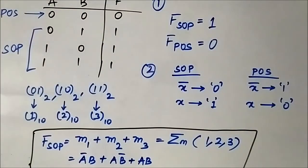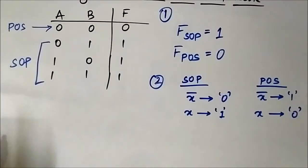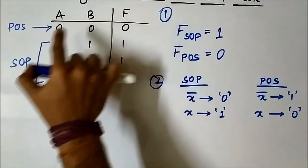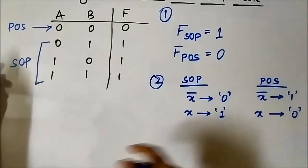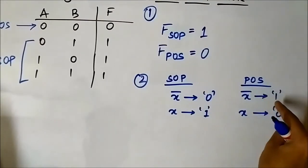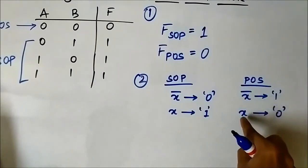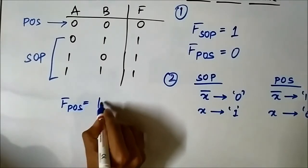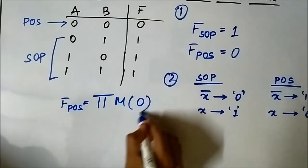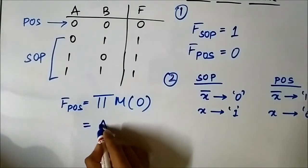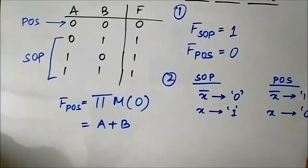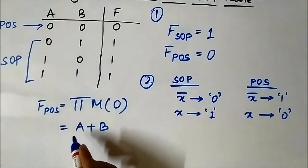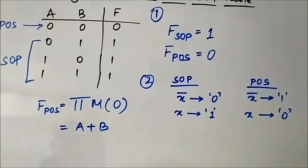Now let us represent the expression in POS form. POS is applicable at those input combinations where the output is 0. Here only one input combination applies: A=0, B=0. The basic rule is that in POS, complemented variables are represented by 1 and uncomplemented variables are represented by 0. So for A=0, B=0, this is maxterm M0, and since both are 0 (uncomplemented), it is represented simply as A + B. So the POS expression is A + B.